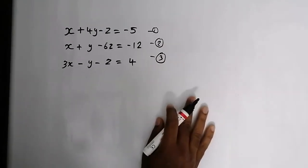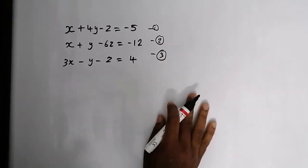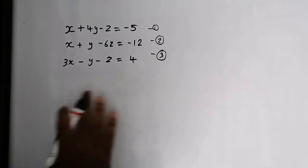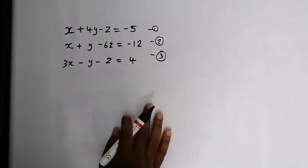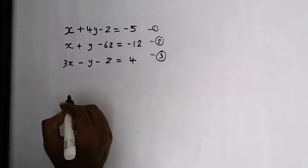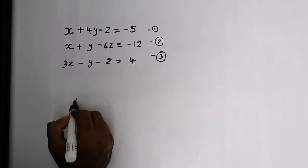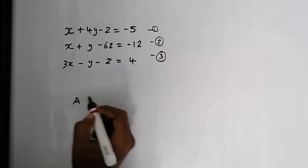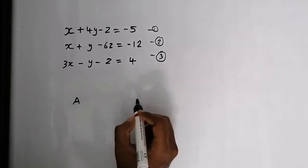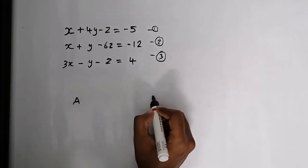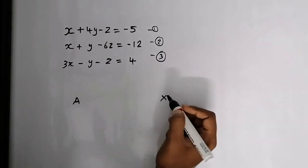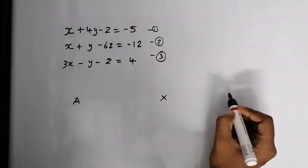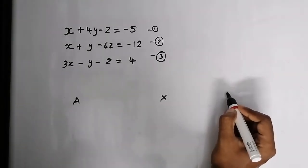The first procedure we need to do is form three matrices. The first matrix will be the matrix of constant coefficients, the second matrix will be the matrix of variables, and the third matrix will be the matrix of constants.